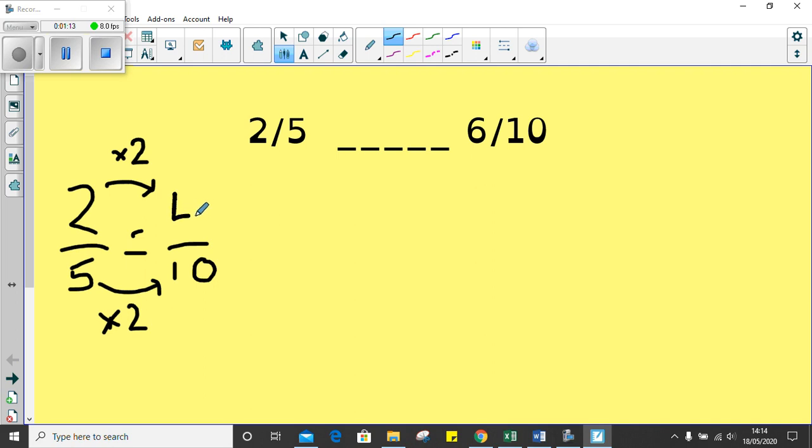So that equals four. So I know that two-fifths is equal to four-tenths. This makes it really easy now for me to compare four-tenths and six-tenths. Now the only numbers that I need to look at are my numerators. I know that six is greater than four, so six-tenths is greater than four-tenths, which also means that six-tenths is greater than two-fifths.